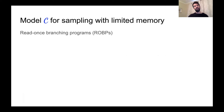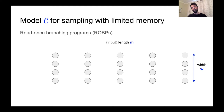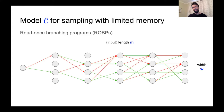A read-once branching program is just a layered directed acyclic graph. The number of layers, say M, we'll call the input length. Each layer will have exactly W nodes, which we call the width of the branching program. There will also be a designated start vertex V star. Each internal node will have exactly two edges going into the subsequent layer, labeled with a zero and one. Let's just color code the edges so that the diagram won't get too messy. All of the nodes in the terminal layer of the ROBP will be labeled with a bit, zero or one.